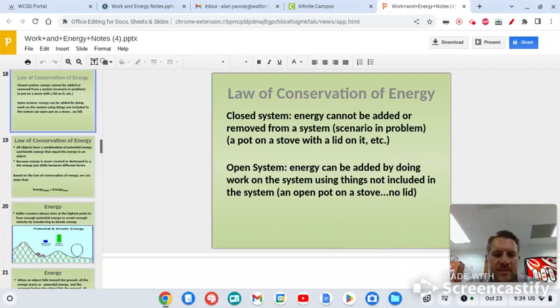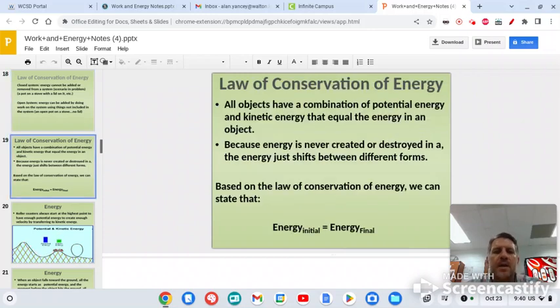In a closed system, energy cannot be added. In an open system, it can be added by doing work, but that's like if you put a pot on a stove and there's no lid and that type of stuff. We're not getting into this stuff. All right, so all objects have a combination of potential and kinetic energy. They equal one another. Because energy is never created or destroyed, energy shifts between the two forms. So your energy at the beginning equals your energy at the end. That's the law of conservation of energy.